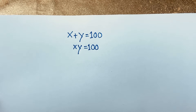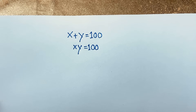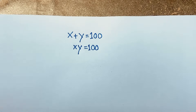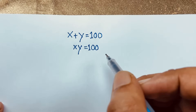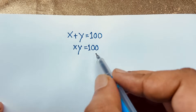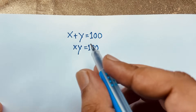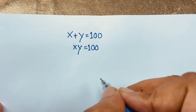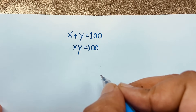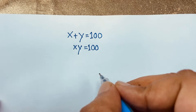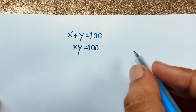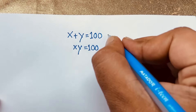Hello beautiful people, welcome to Russia's classroom. Today we have solved a nice Math Olympiad question. This question is: x plus y is equal to 100, and x times y is equal to 100. We'll find out what is the value of x and y in this Math Olympiad question.